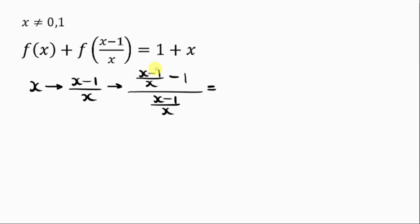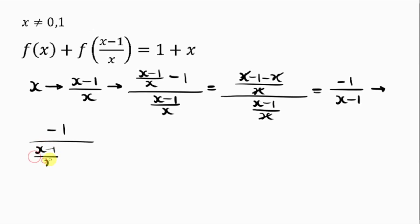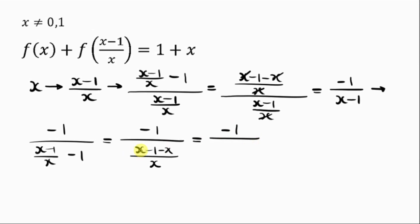When I simplify this by combining the fraction at the top, I'll have x minus 1 minus x all over x, divided by x minus 1 over x. Notice that the x cancels and x minus x gives zero, so I have negative 1 all over x minus 1. Again, replacing this x with x minus 1 over x gives negative 1 all over x minus 1 minus x all over x, which simplifies to negative 1 all over negative 1 over x. The negatives cancel, so this results to x.